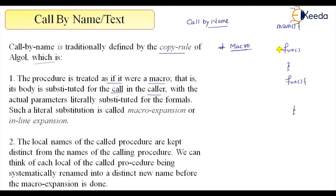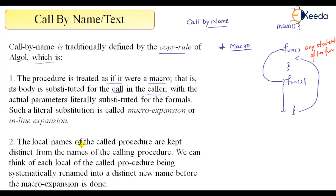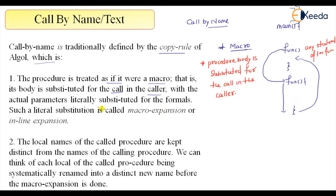Normally, the control flow goes from the call point to the function, it completes the entire function, and then control returns to that particular point. But here what it says is that the procedure body is substituted — the procedure body is substituted for the call in the caller.